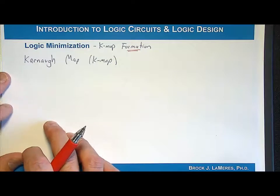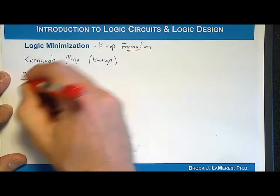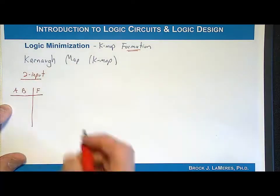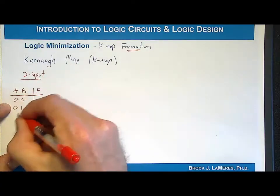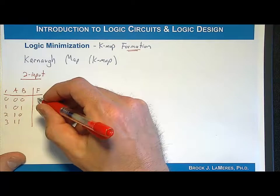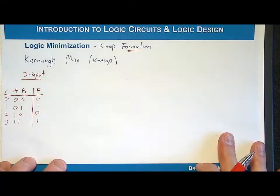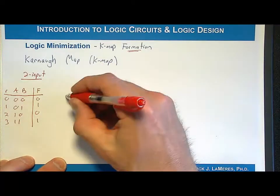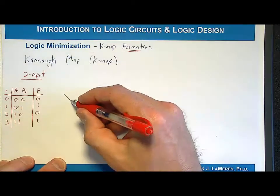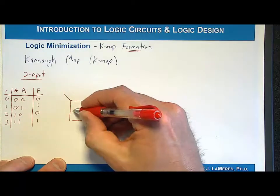Let's start with a two-input Karnaugh map. We'll take a truth table with input variables having codes 00, 01, 10, 11 — rows 0, 1, 2, 3 — and let's say the outputs were 0, 1, 0, 1. What we do now is take this truth table and put it into a grid form. Notice there were four rows in the truth table, so we'll have four cells in the grid.